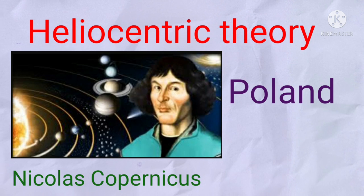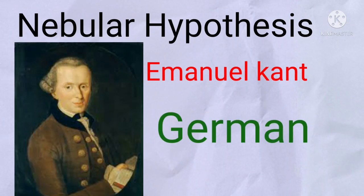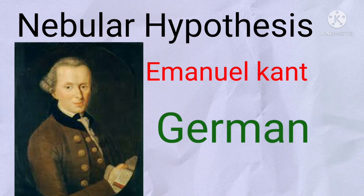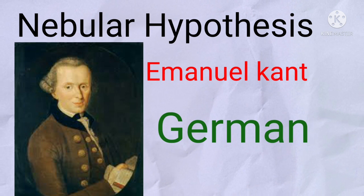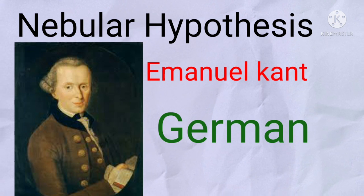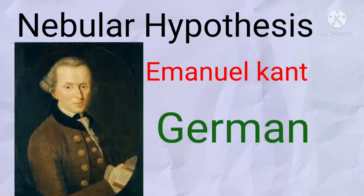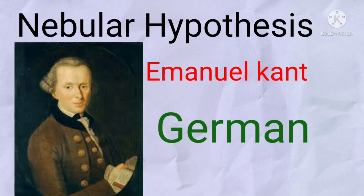According to the heliocentric theory, the planets, satellites, and all other celestial bodies revolve around the sun. The third theory is the nebular hypothesis. According to the nebular hypothesis, the planets were formed out of a cloud of dust and gases associated with the sun. This theory was developed by Immanuel Kant.